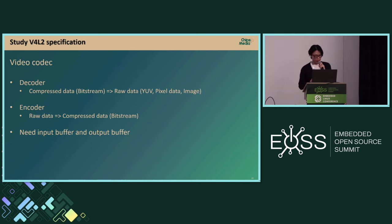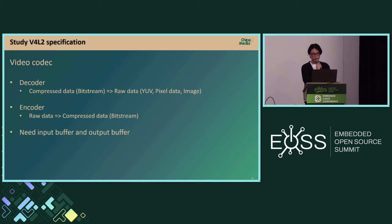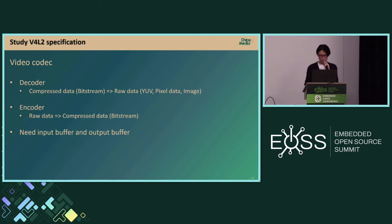Video data size is very large, so we usually compress it using various algorithms — this is called encoding. The compressed data is called a bitstream. A decoder converts a compressed bitstream back to raw data, while an encoder compresses raw data into a bitstream. Video coding therefore needs both an input buffer and an output buffer.